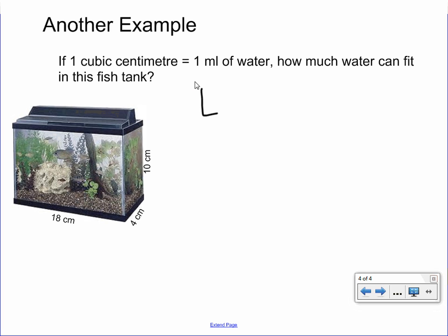But let's go ahead and do this example. So again, we have our volume equals length times width times height. And now we can plug in our numbers. Length, 18 centimeters times our width, which is 4 centimeters, times our height, which is 10 centimeters. Perfect.